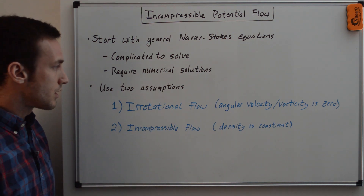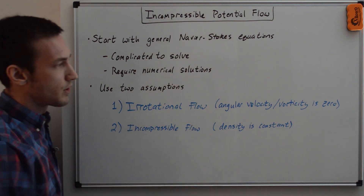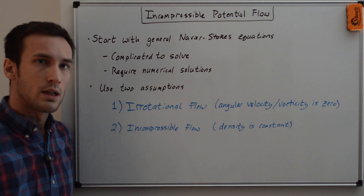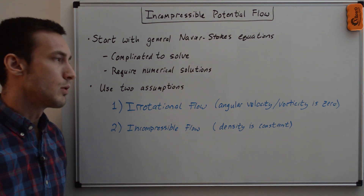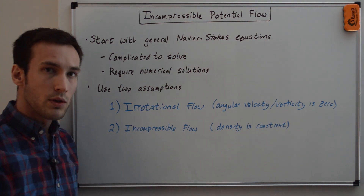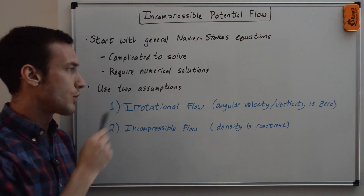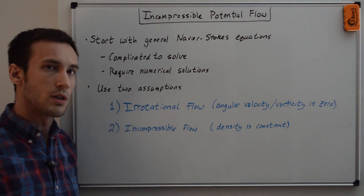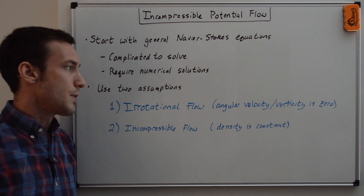The first assumption we're going to use is irrotational flow, which means that the angular velocity or vorticity is zero. The second assumption is incompressible flow, where the density is constant. To get what is called the potential flow equation, you only need the first assumption — the irrotational flow assumption. This will give the full potential equation.